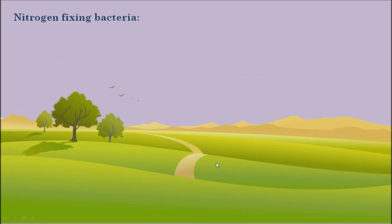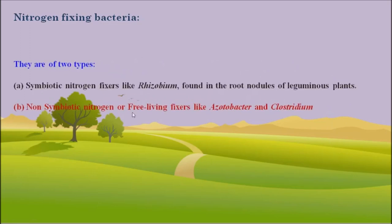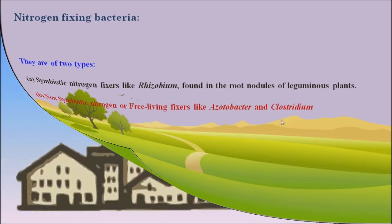The third category of bacteria is nitrogen-fixing bacteria. These bacteria can fix atmospheric nitrogen. They are of two types: symbiotic nitrogen fixers and non-symbiotic nitrogen fixers. The symbiotic nitrogen fixers are Rhizobium, found in root nodules of leguminous plants. Non-symbiotic or free-living nitrogen fixers include Acetobacter and Clostridium.